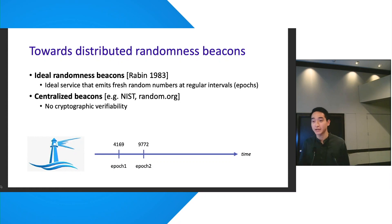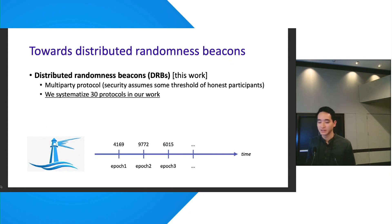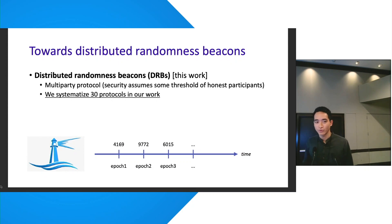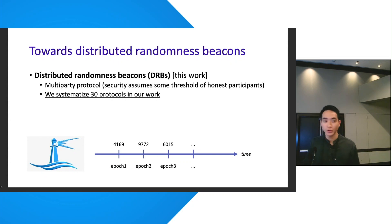While the most straightforward attempt to realize this ideal beacon has been through centralized or implicit beacons, due to the advent of proof-of-stake blockchains, BFT consensus, and leader election in the context of blockchains in the recent decade, there's been a great deal of interest and progress in distributed randomness beacons, which we systematize in this work.